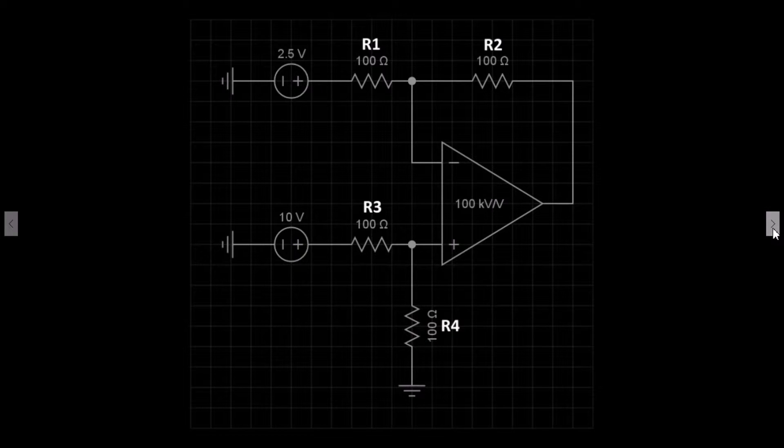We also have two DC power supplies labeled V1 and V2. V1 feeds through R1 to the inverting input.